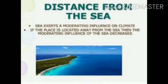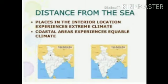Relief features also modify the temperature by forming a barrier to the movement of winds at lower levels. For example, the lofty mountains prevent the movement of cold winds from Central Asia towards the northern plain of India, which experiences a comparatively mild winter.